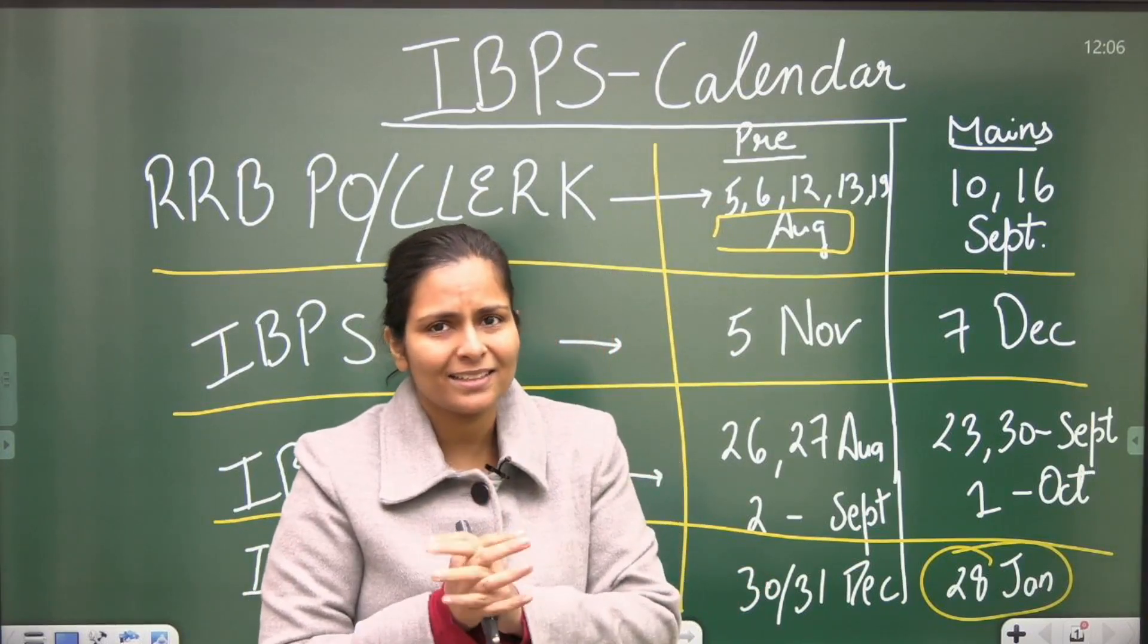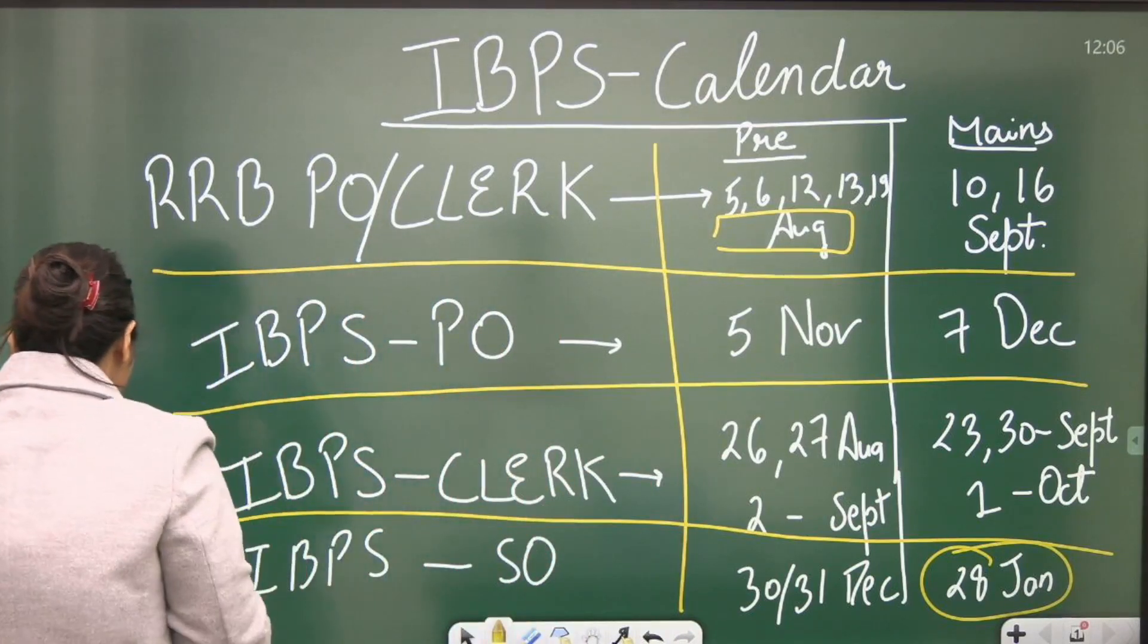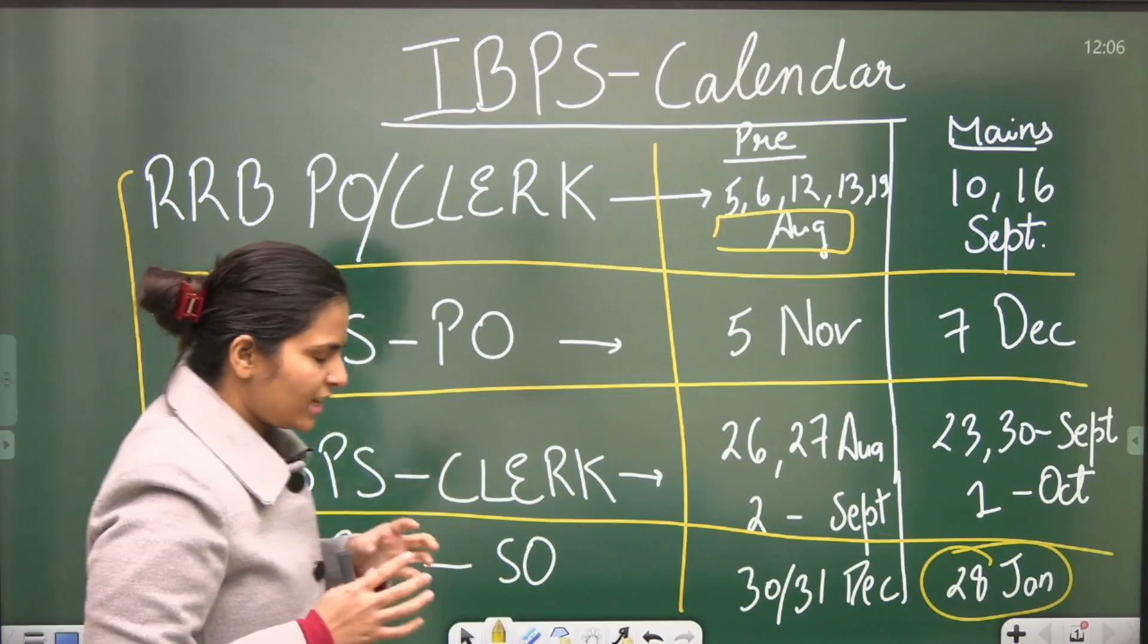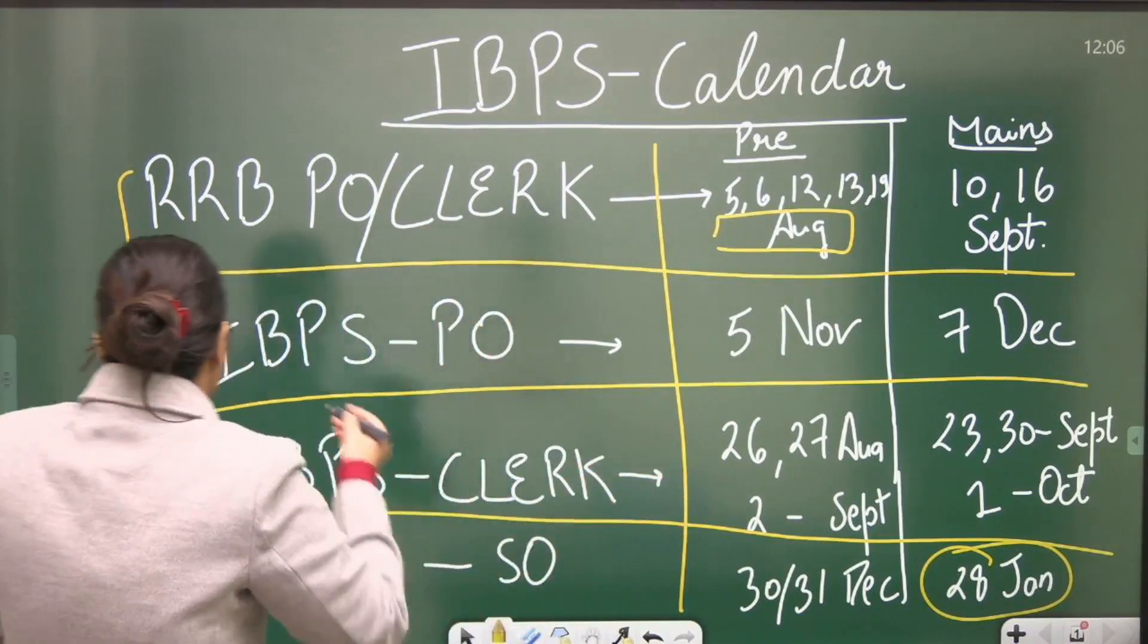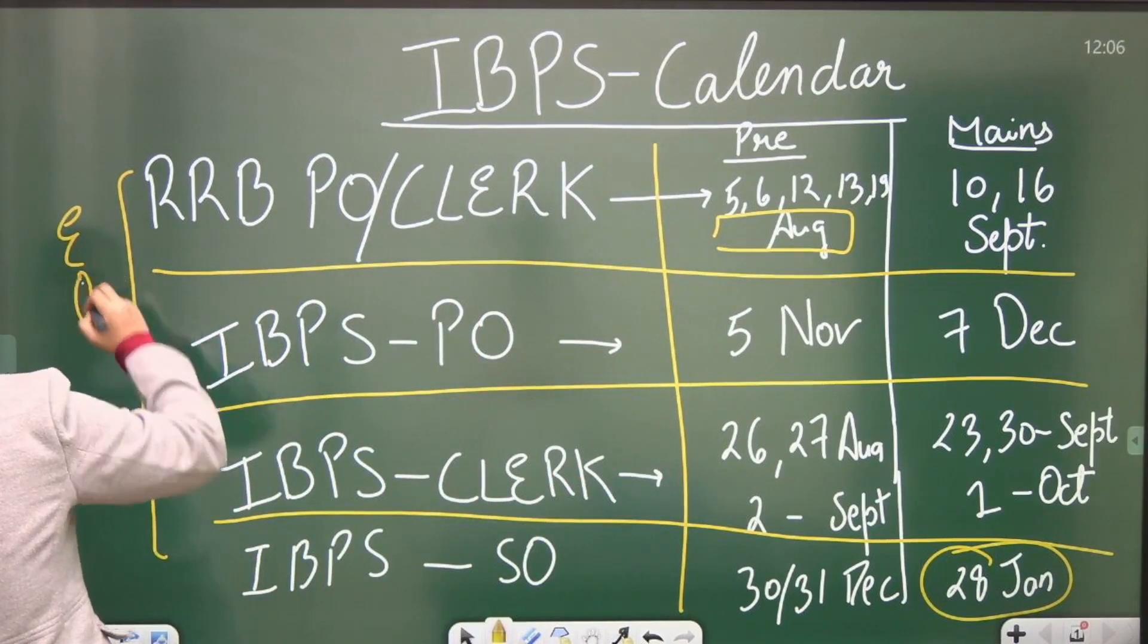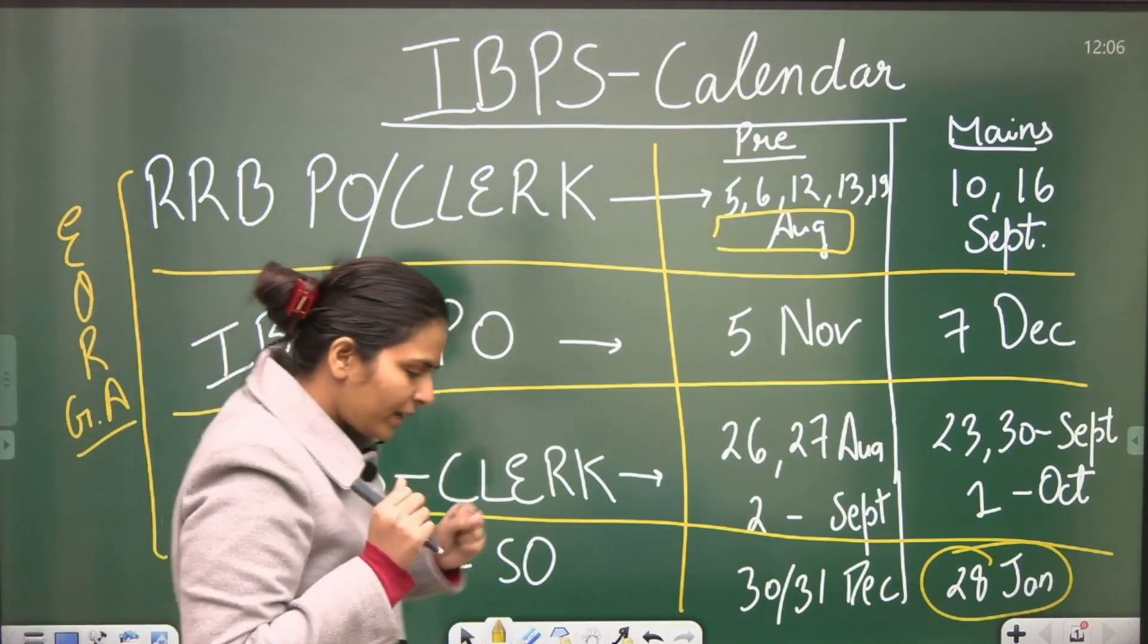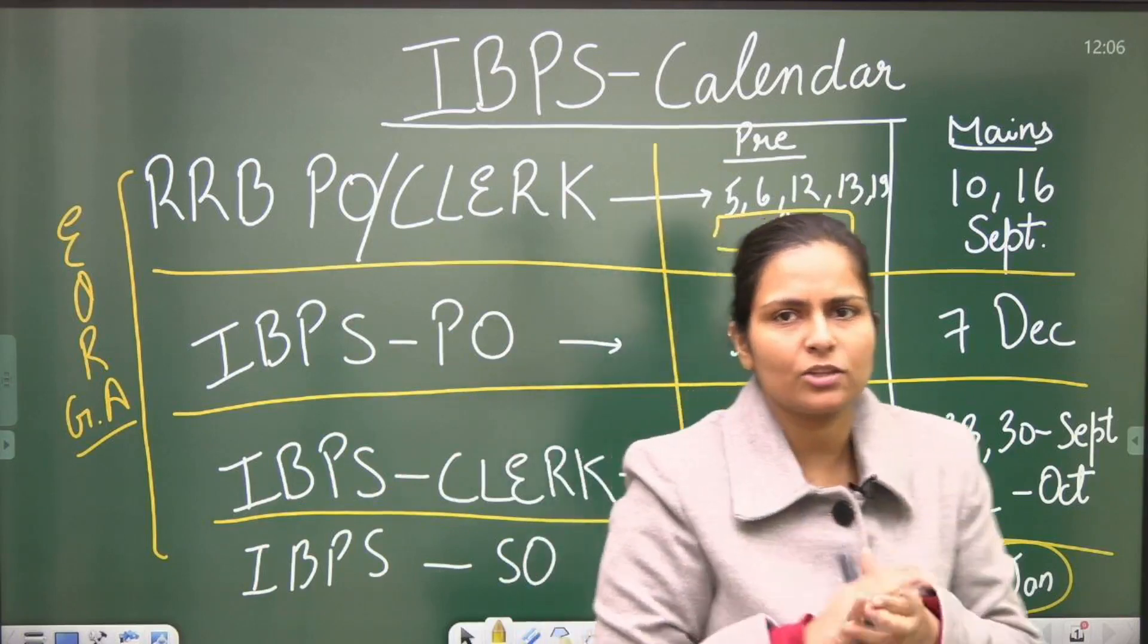What do we need to do and in which way? First of all, we have to look at which common subjects are common. There are 3-4 things that are in every exam: English, Quants, Reasoning, General Awareness or Banking Awareness. We need to make these 4 things stronger.